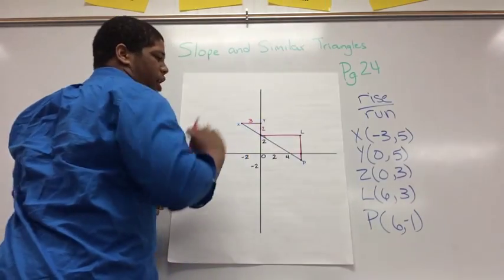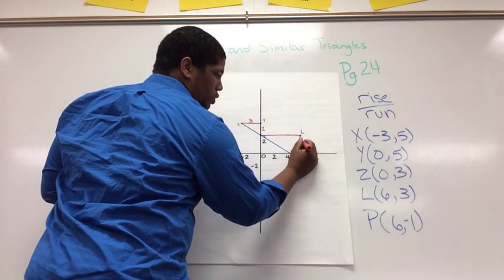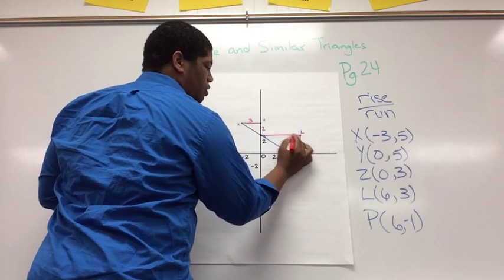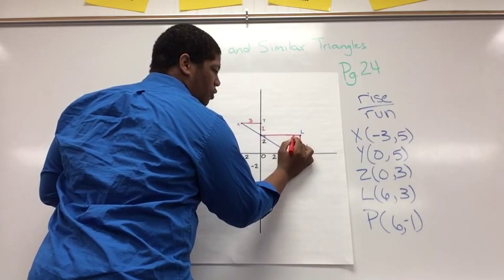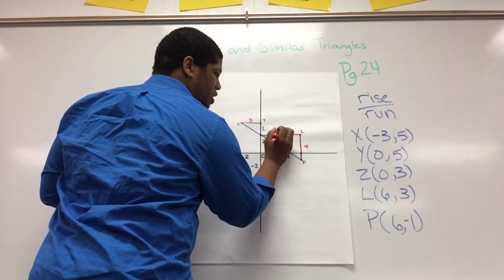So to get from P to L, I went up 1, 2, 3, 4. And then from L to Z, I went left 1, 2, 3, 4, 5, 6.